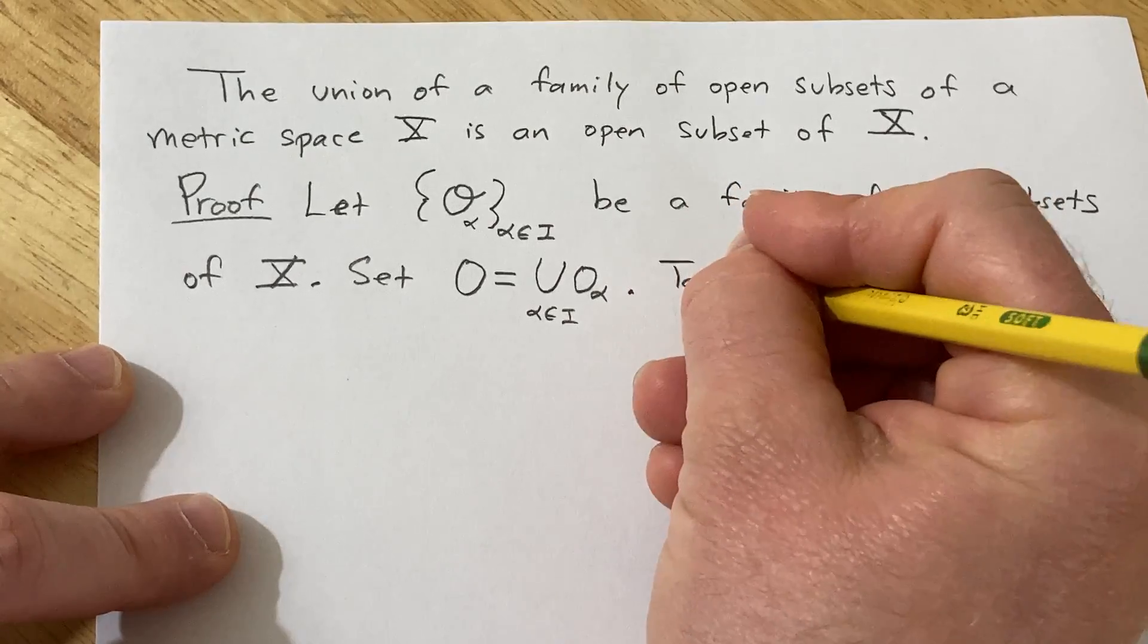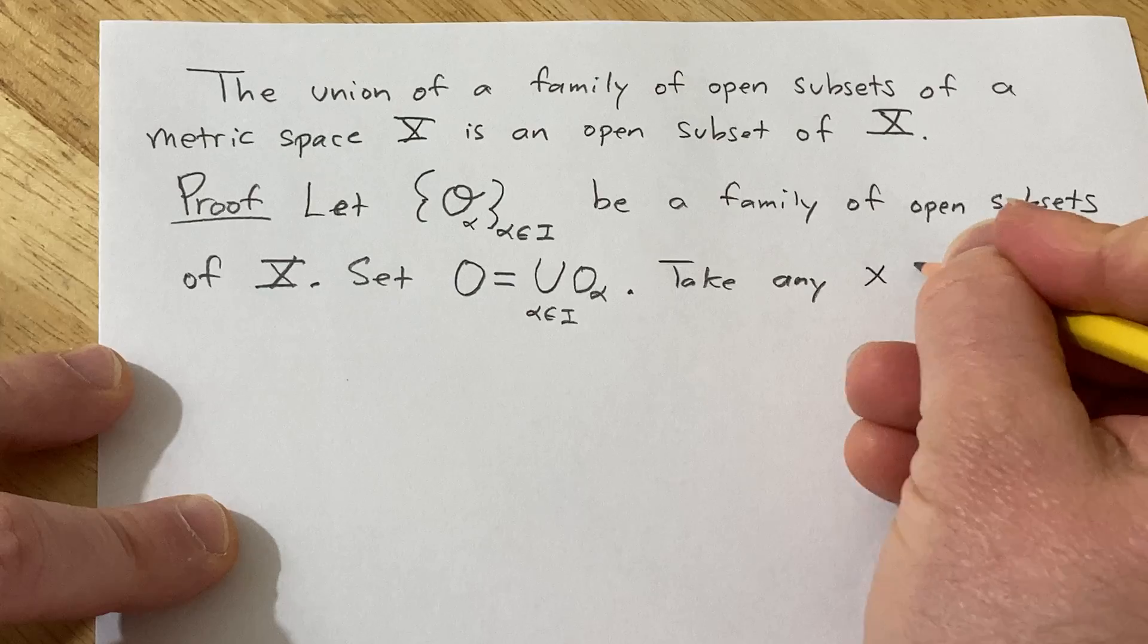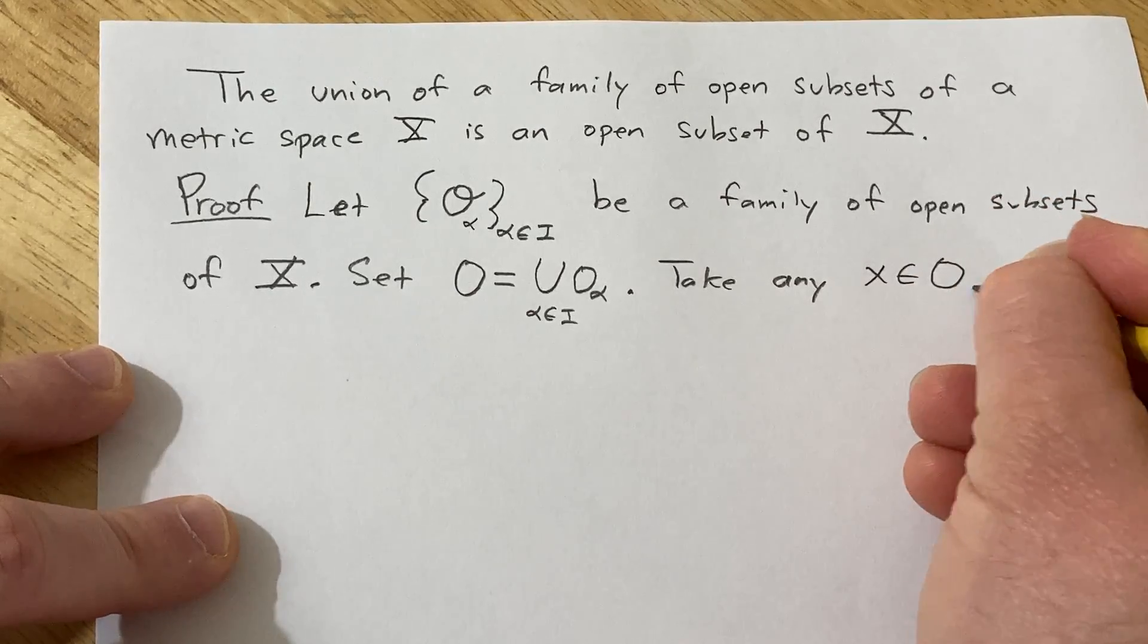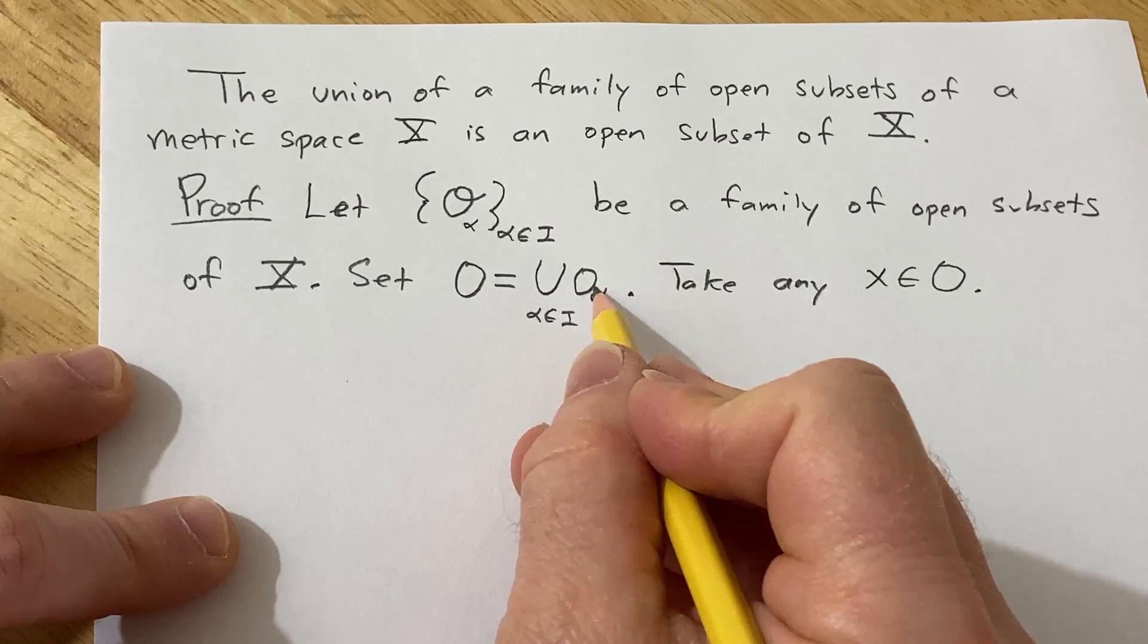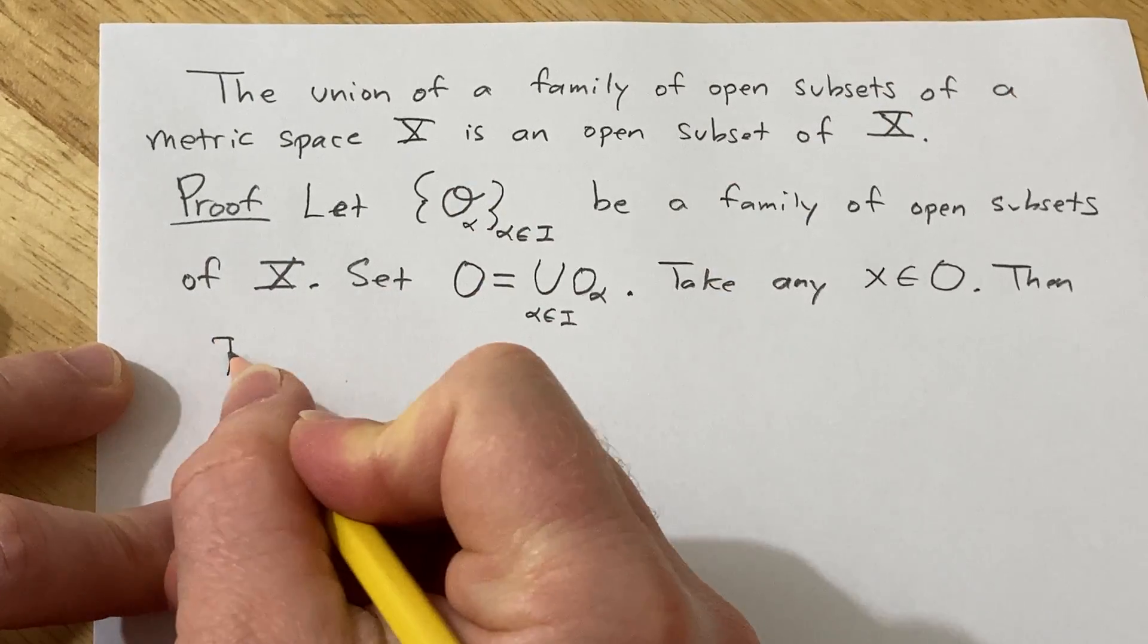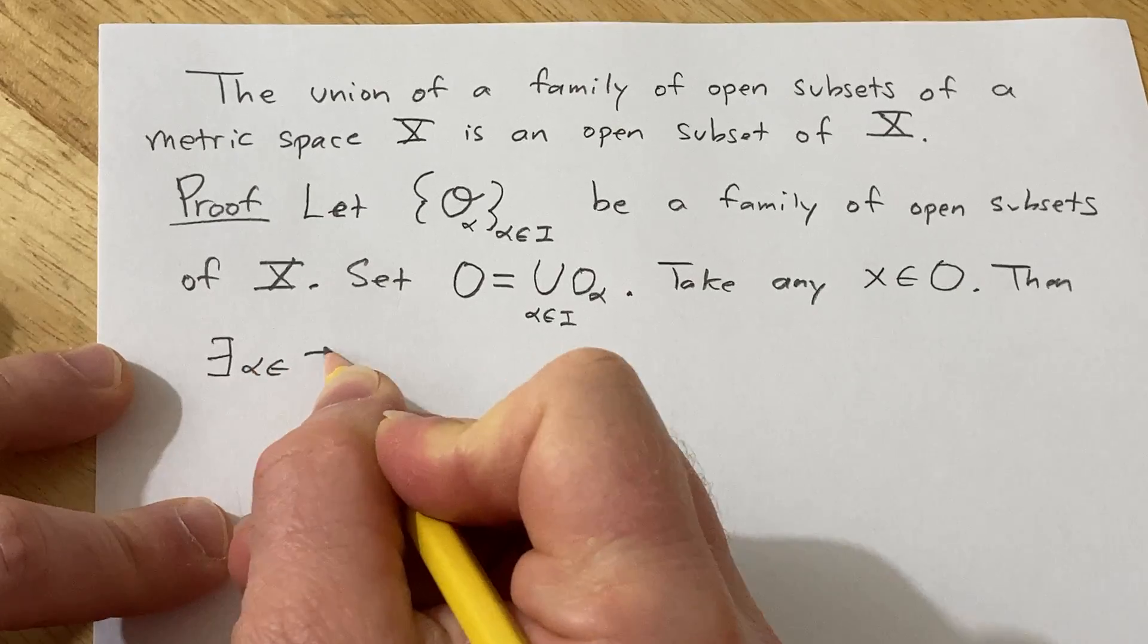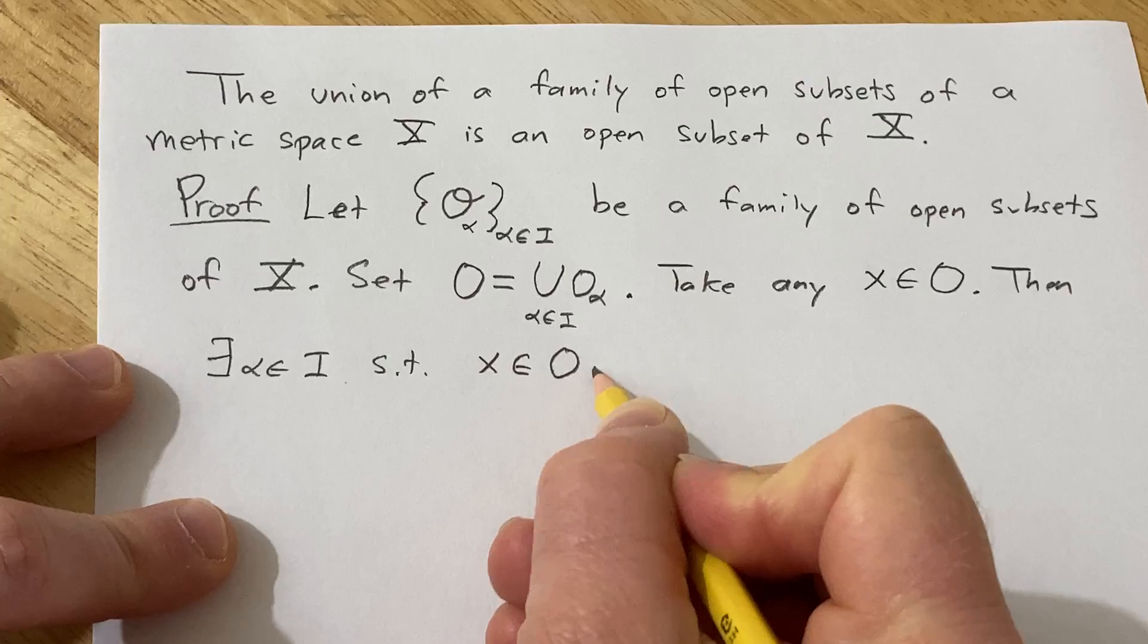So take any x in O. Well, if it's in O it means it's in the union. That means it's in at least one of these. So then there exists some alpha in i such that x is in O sub alpha.